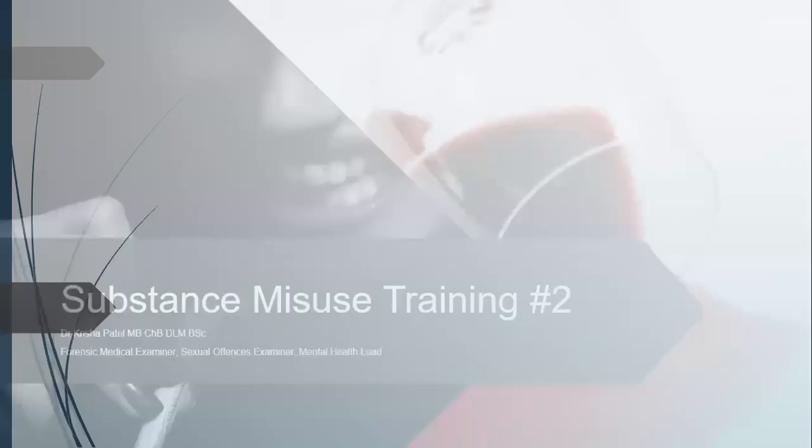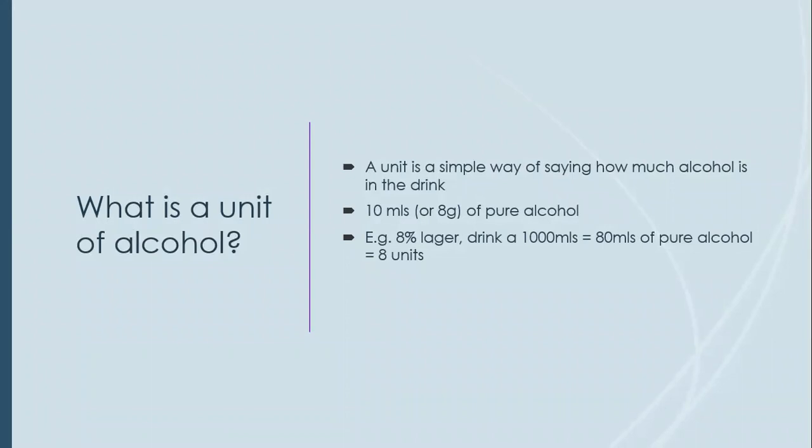In this session we're going to define what a unit of alcohol is. A unit of alcohol is a simple way of saying how much pure alcohol is in a drink. It's defined as 10 mils or 8 grams of pure alcohol. There are only two pieces of information we need to work out how many units are in a drink: the percentage of alcohol content and the volume of the drink.